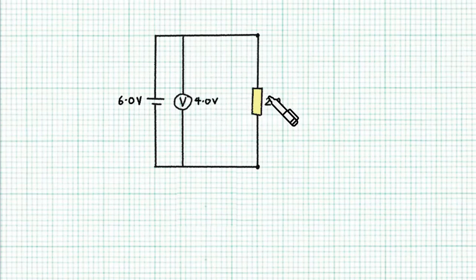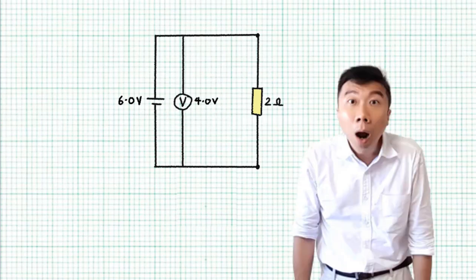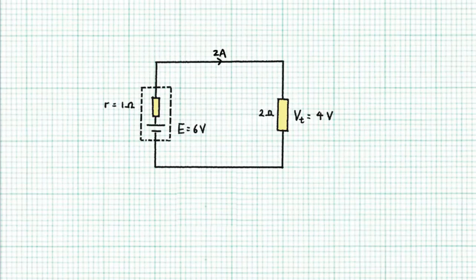When I connect a 2 ohm resistor across the battery, the voltmeter reads 4.0 volts. What? Okay, let me introduce you to this thing called the internal resistance.